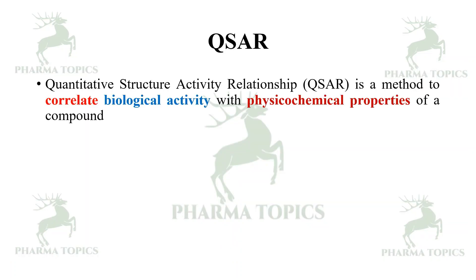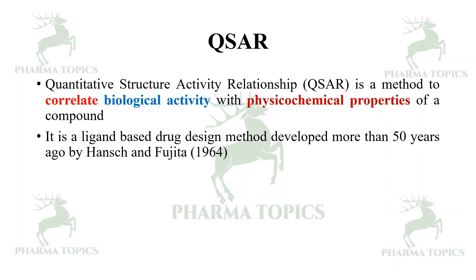QSAR is a method to correlate biological activity with the physicochemical properties of a compound. It is a ligand-based drug design method developed over more than 50 years by Hansch and Fujita, and was modified in 1964.